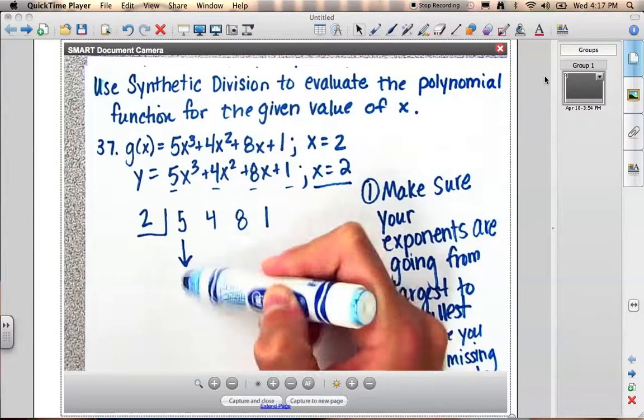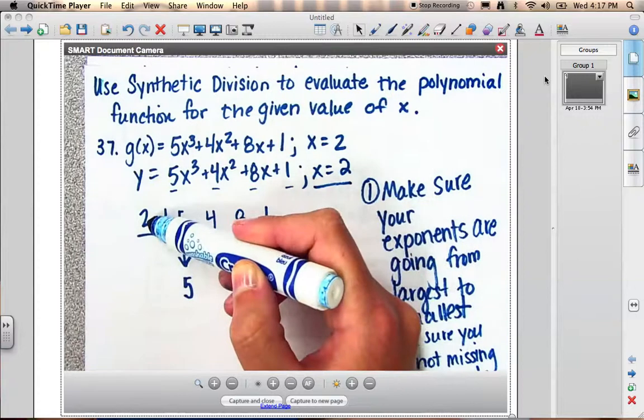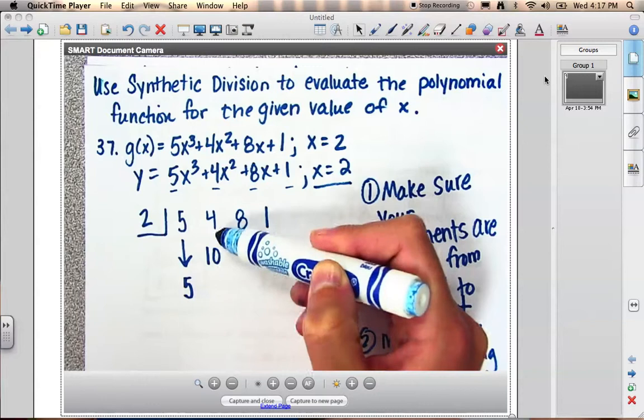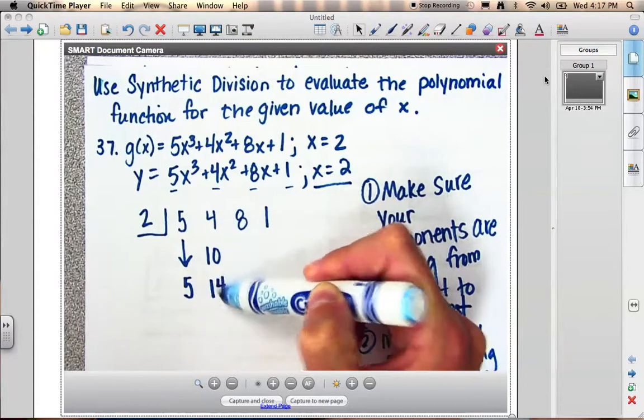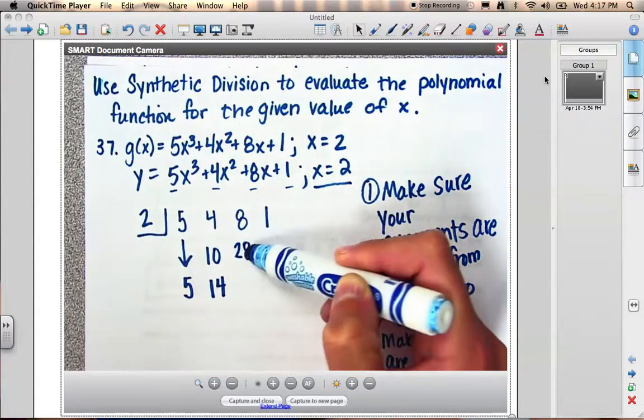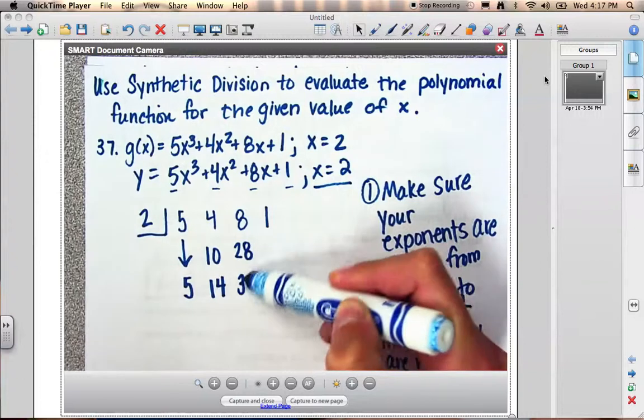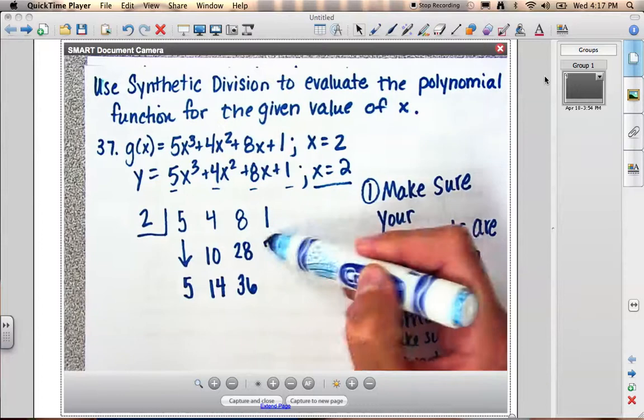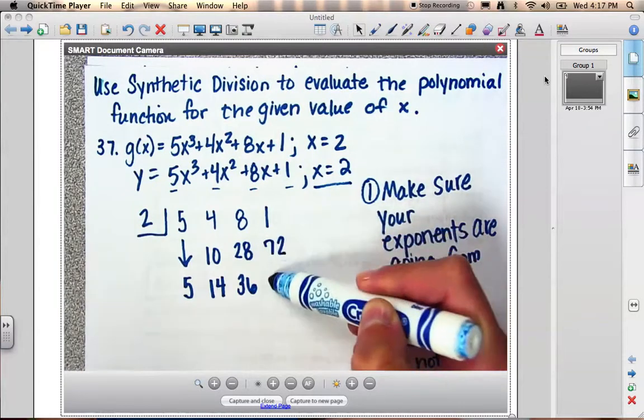Then I'm going to drop the 5, multiply the number in the backwards L to that 5, be it 10, and put it under the 4, under the next column. And 4 plus 10 would be 14. Times 2, I would put 28 in this column. 28 plus 8, that would be a 36. And 2 times 36 is going to be 72. So 1 plus 72 would be 73.